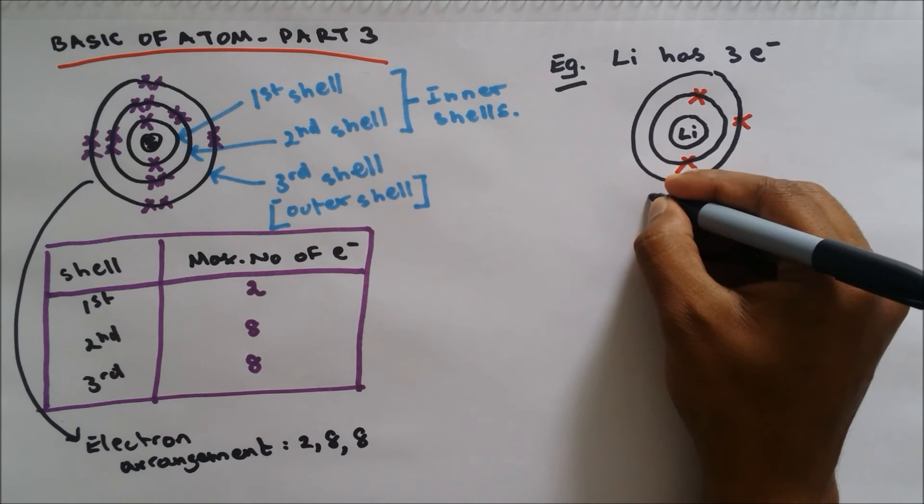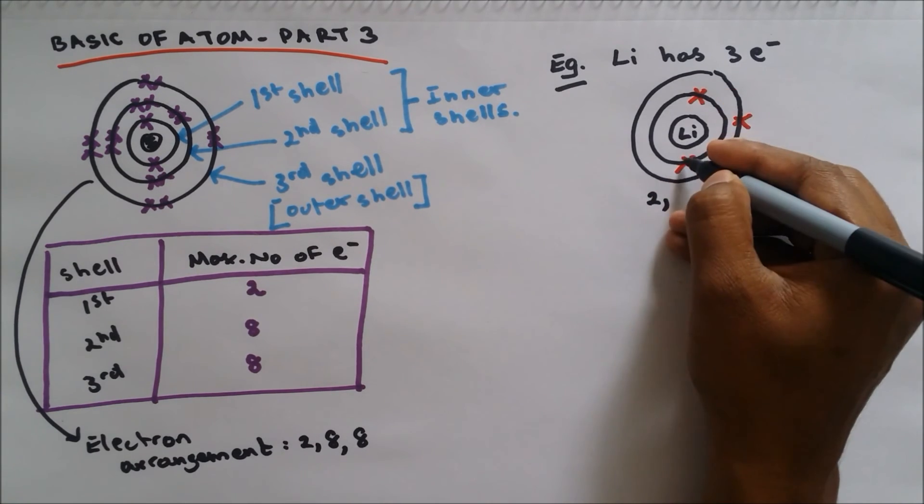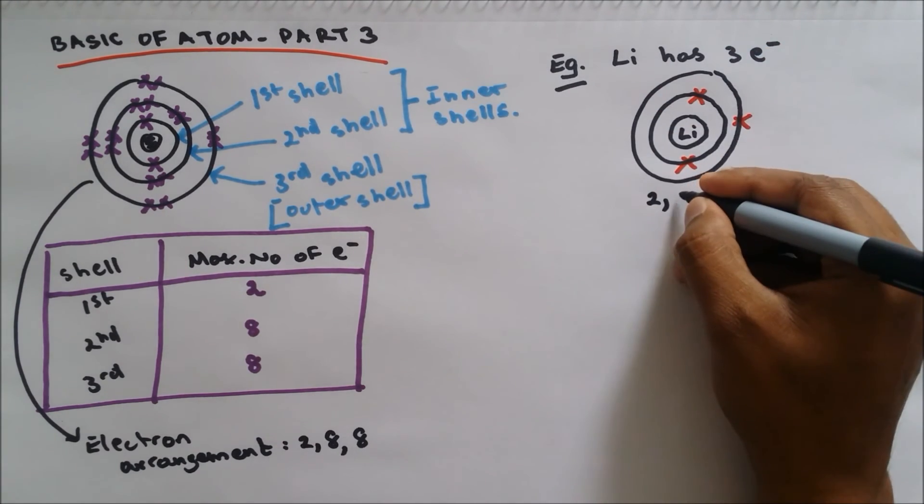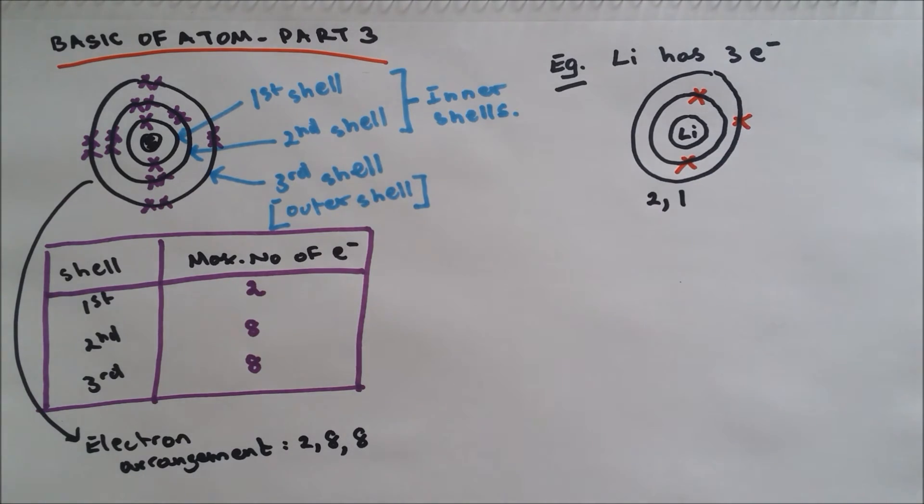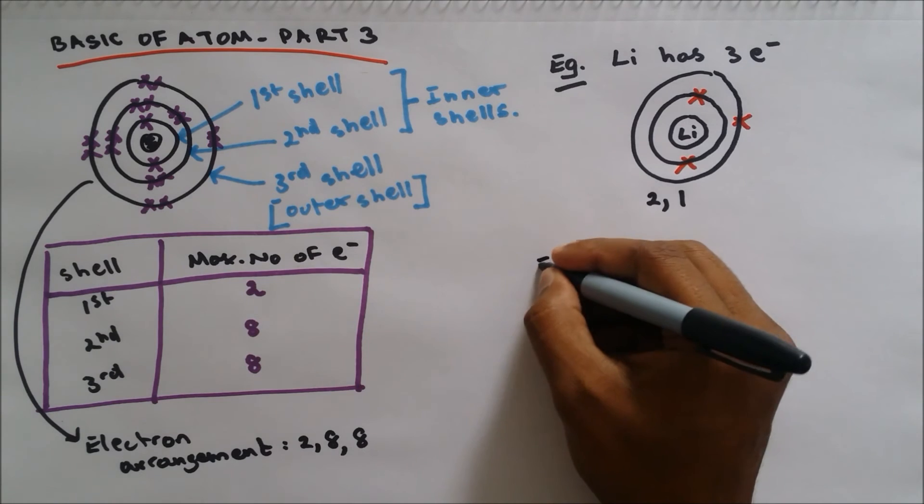So electron arrangement is two because there's two in the first shell, and then one because there's one in the outer shell. Okay, let me give you another example.